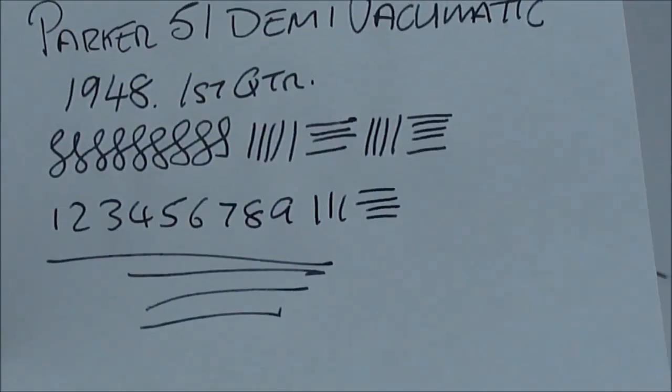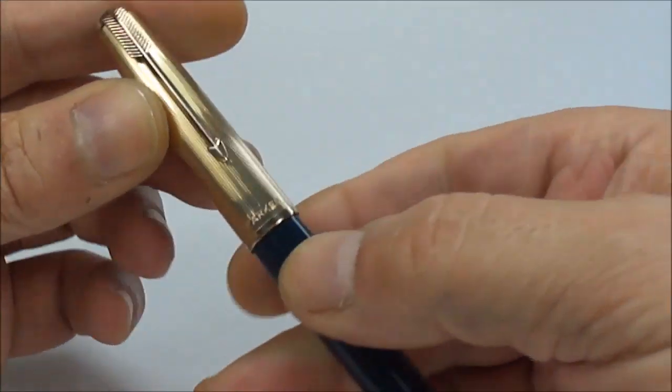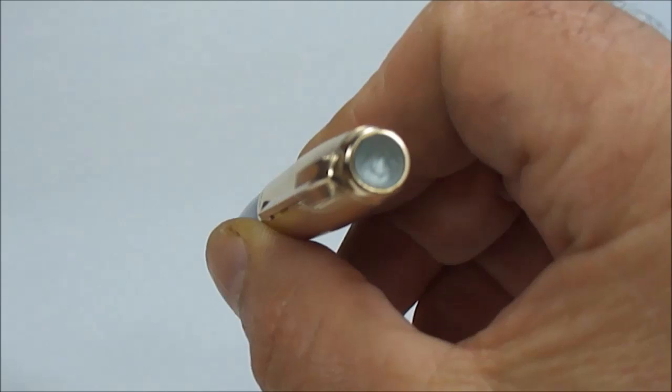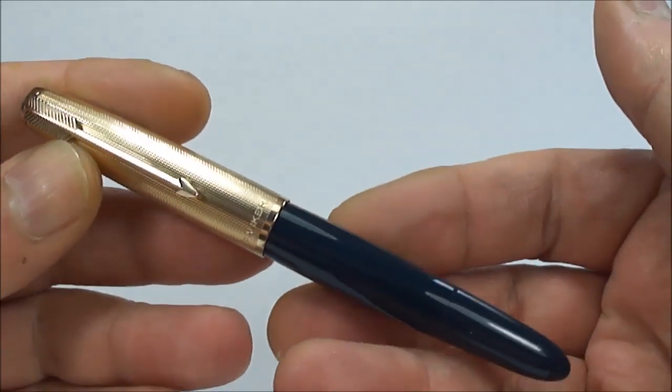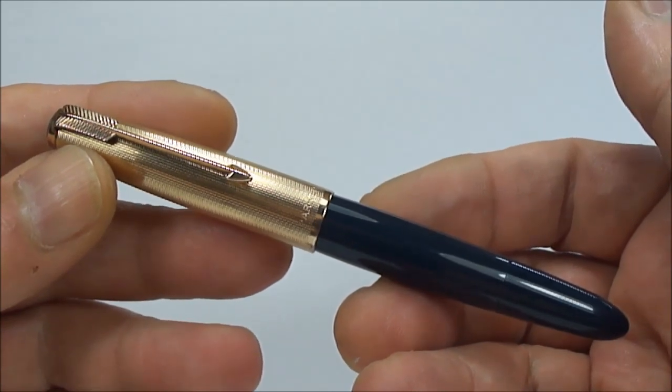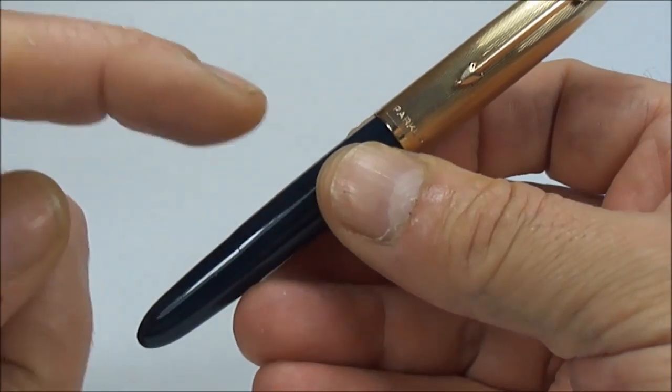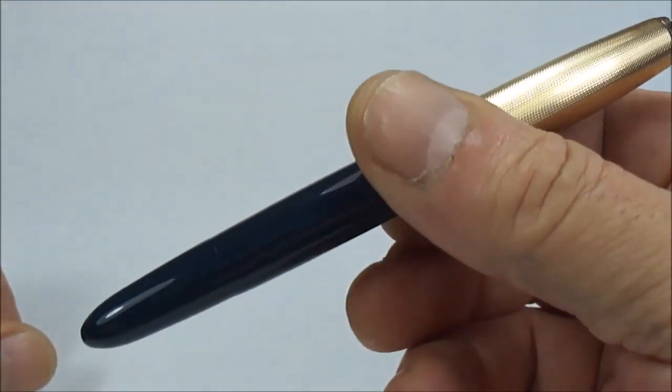So there we have a writing sample, writing with a fine line, nice and smoothly as well. Let's pop the cap back on like so. And there we have it, ladies and gentlemen: an absolutely beautiful example of a Parker 51 vacuumatic, made in Canada, 1948, in absolutely superb condition, fully serviced and fully working.